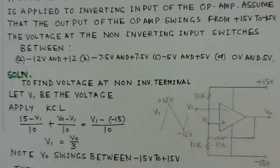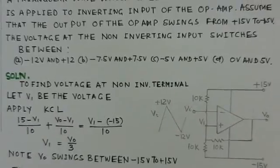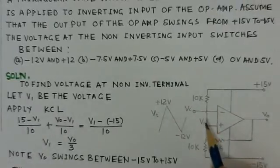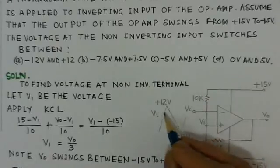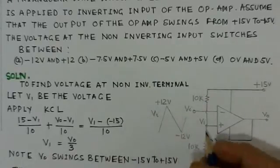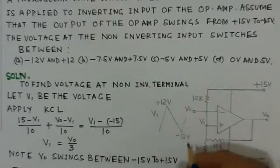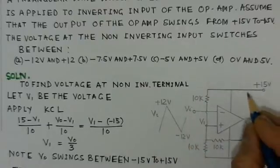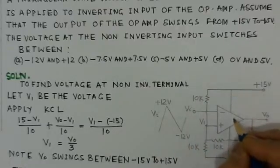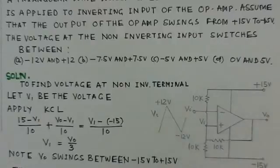And this Schmidt trigger is applied a triangular input having plus minus 12 volts. The supply voltage to this operational amplifier is plus minus 15 volts.